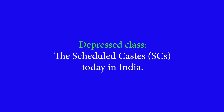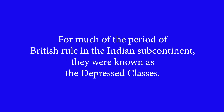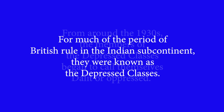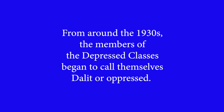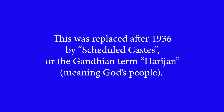Depressed classes were essentially the scheduled castes, or SCs, in India today. For much of the period of British rule in the Indian subcontinent, they were known as the depressed classes. But from around the 1930s, members of the depressed classes began to call themselves Dalit, or suppressed. The term more appropriately signified their socio-economic position in Hindu India than the colonial term, replaced after 1936 by the scheduled castes, or the Gandhian term Harijan, meaning God's people.